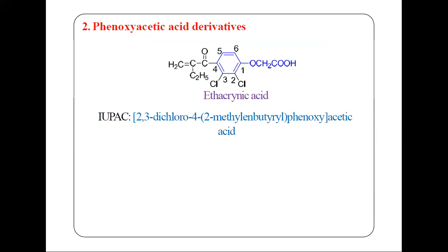The second class of loop diuretics is phenoxyacetic acid derivatives. The blue-colored part in the structure is the phenoxyacetic acid. The structure also has 2 chloro groups and another group at position 7. Numbering: position 1 gets the number; 2,3-dichloro; then at position 4 there is a 2-methylenbutyryl group (because of the double bond). This compound is called ethacrynic acid.